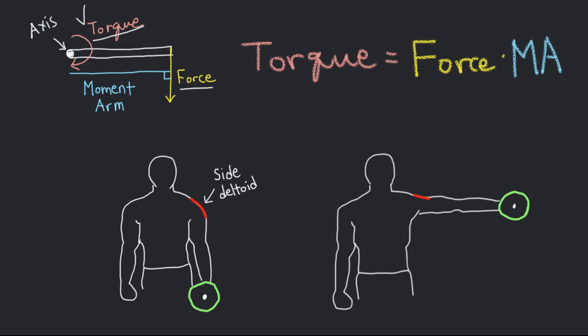Torque is calculated by multiplying the force acting on an object by the moment arm, or the perpendicular distance — the shortest distance from the axis to the line of action of force.